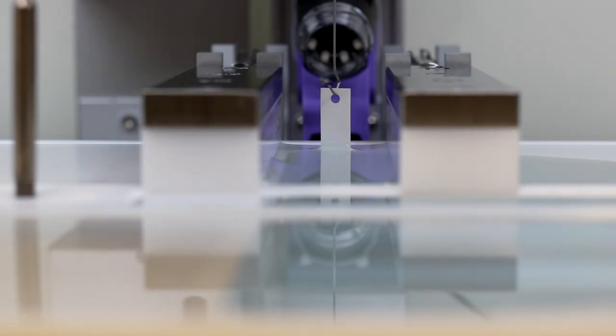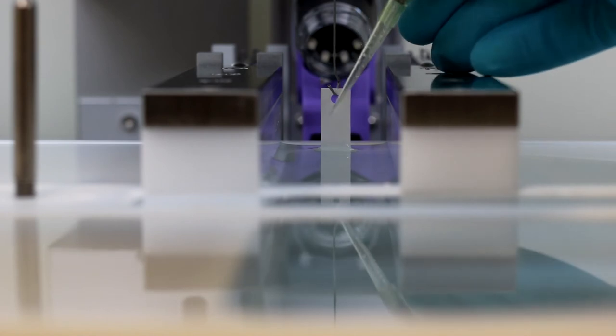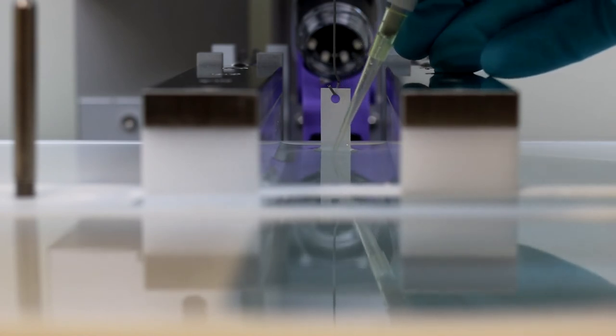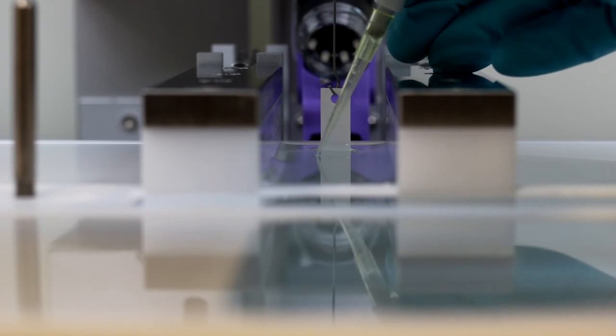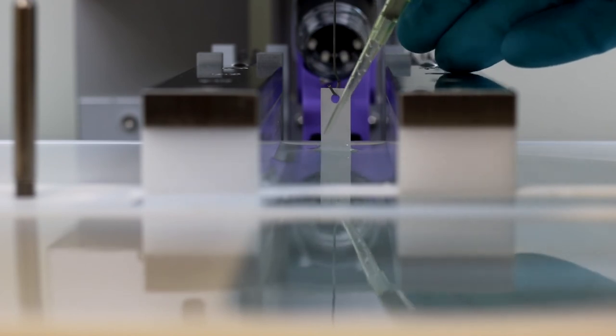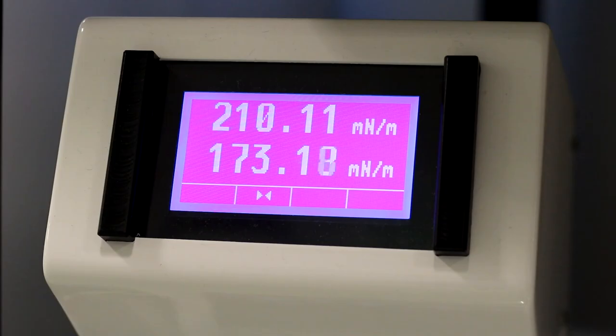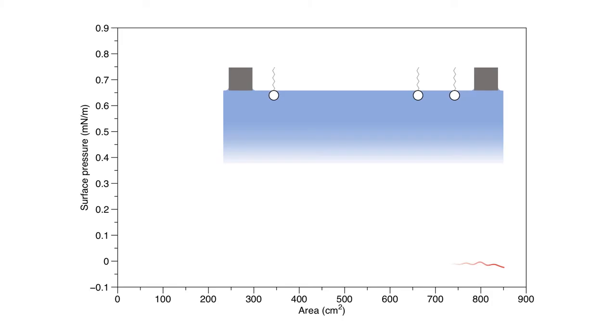When aspirating, listen out for a gurgling sound that tells you the tip of your aspirator is at the air-water interface and not sucking up the bulk sub-phase. We then repeat the process again. We expand the barriers, zero the surface pressure reading and perform an isotherm to evaluate the level to which our water's surface is contaminated.